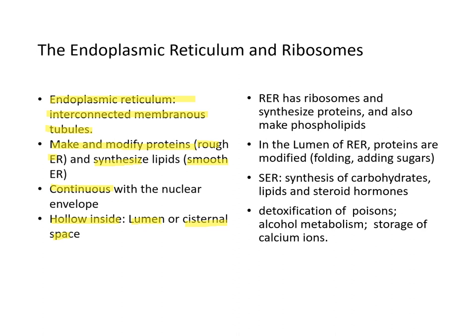Rough ER has ribosomes on its surface which synthesize proteins and also make phospholipids. Inside the lumen, proteins are modified by folding and by the addition of sugars.